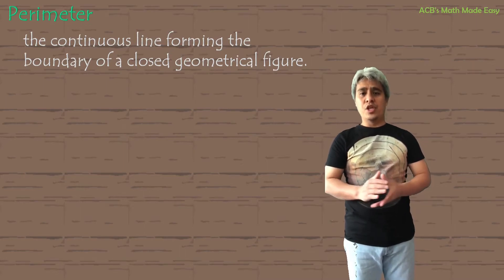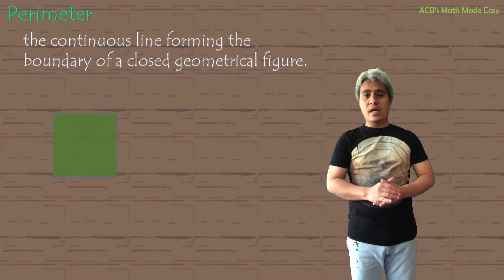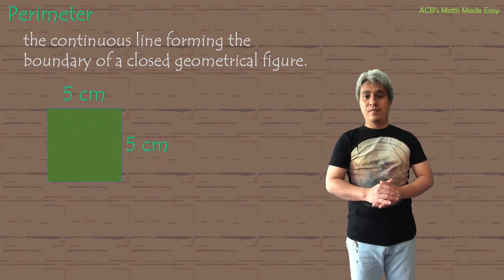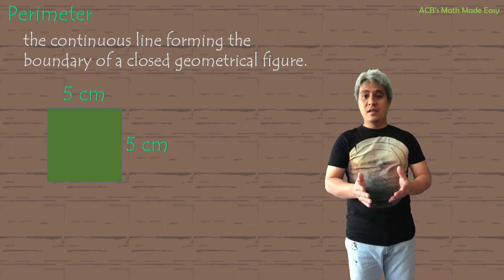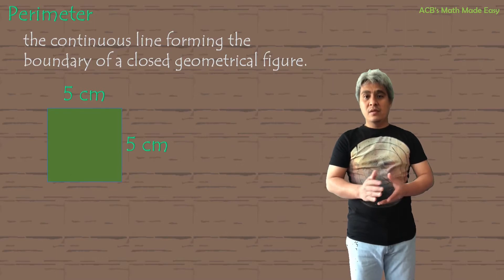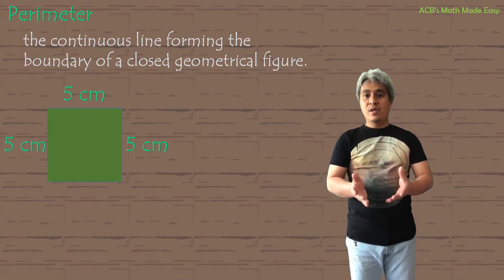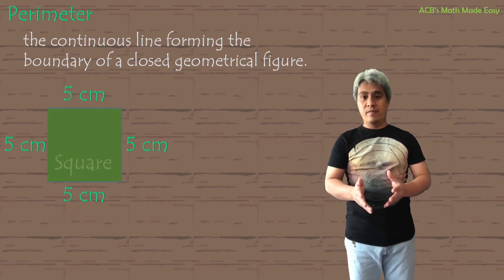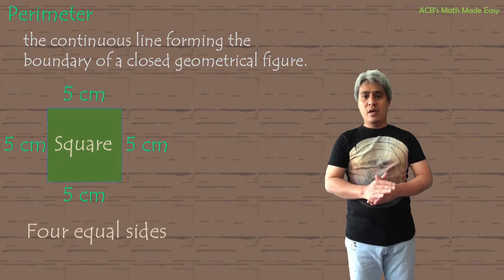This is our shape. One side of the shape measured 5 cm and the other side is 5 cm too. So it means that the measurement of the other two sides are 5 cm each. So our shape is a square. A square has 4 equal sides.